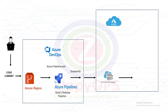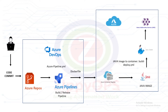In the final stage, the Azure pipeline executes the commands which deploy the pod by pulling the latest image from Azure Container Registry into Azure Kubernetes Services. Finally, the Java application is running on the Azure Kubernetes Service Cluster.